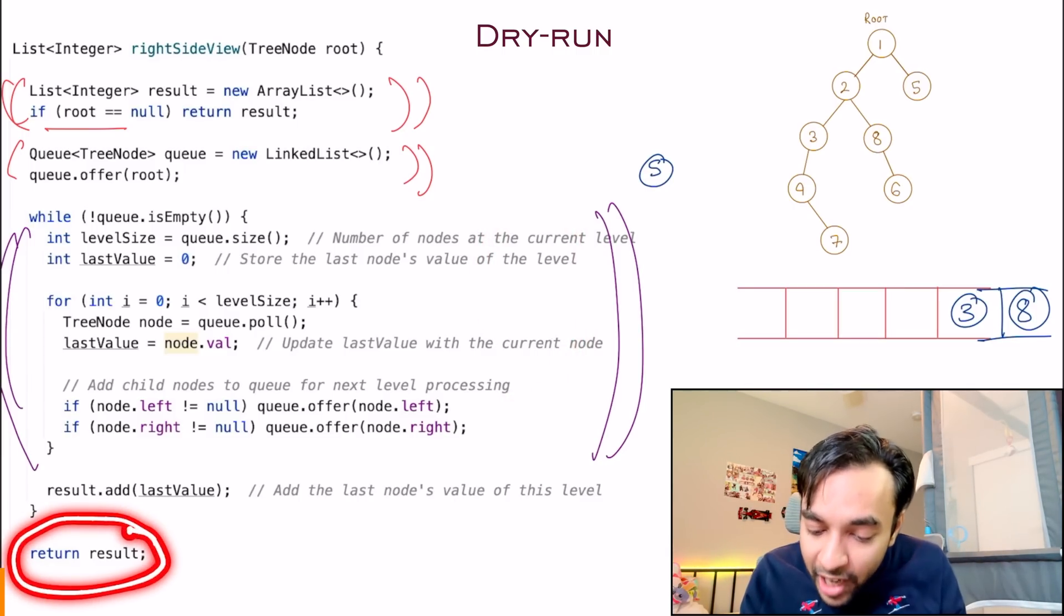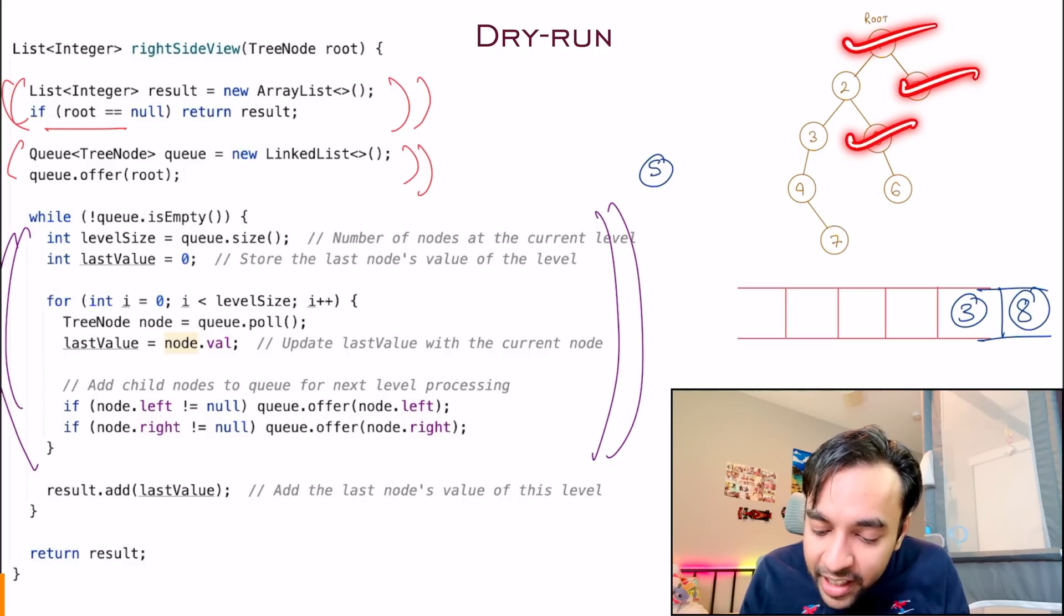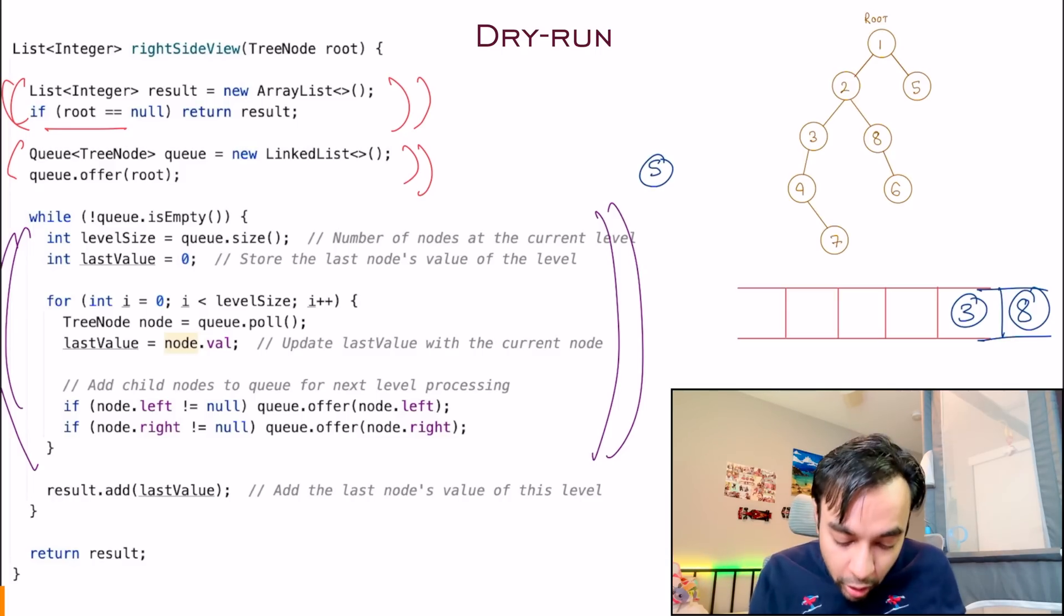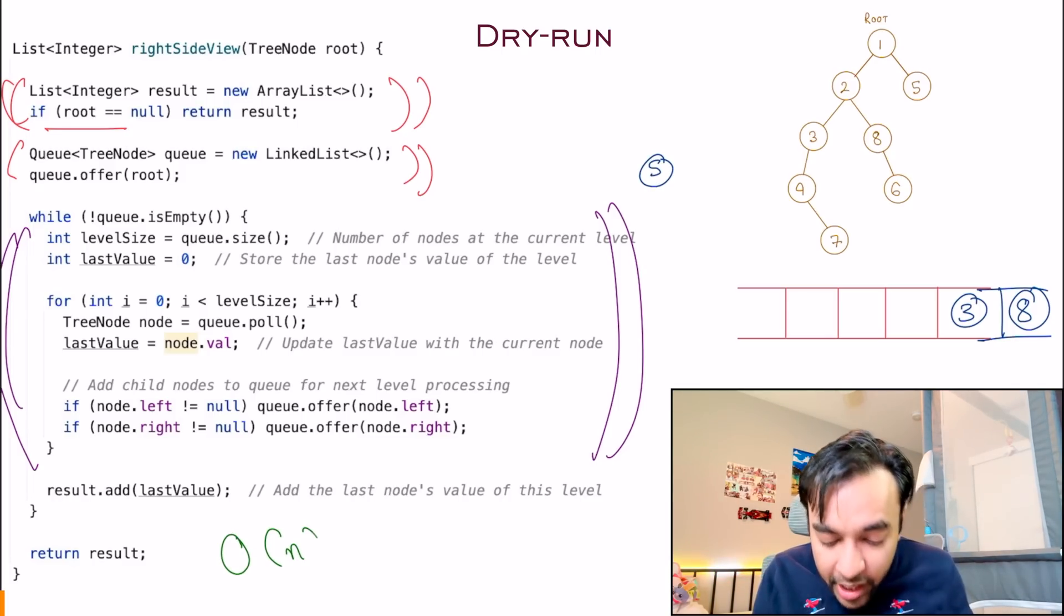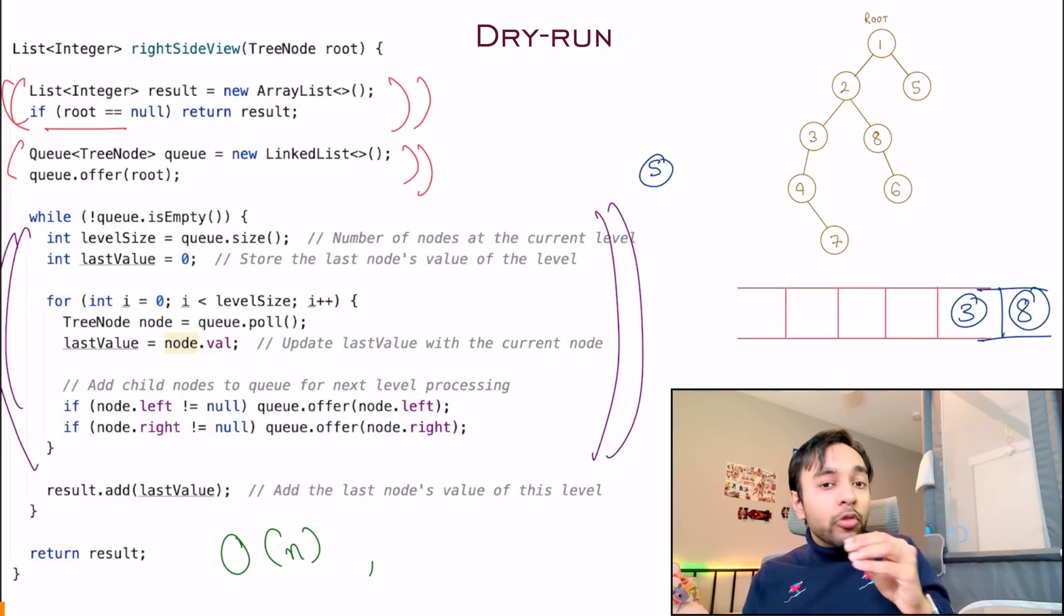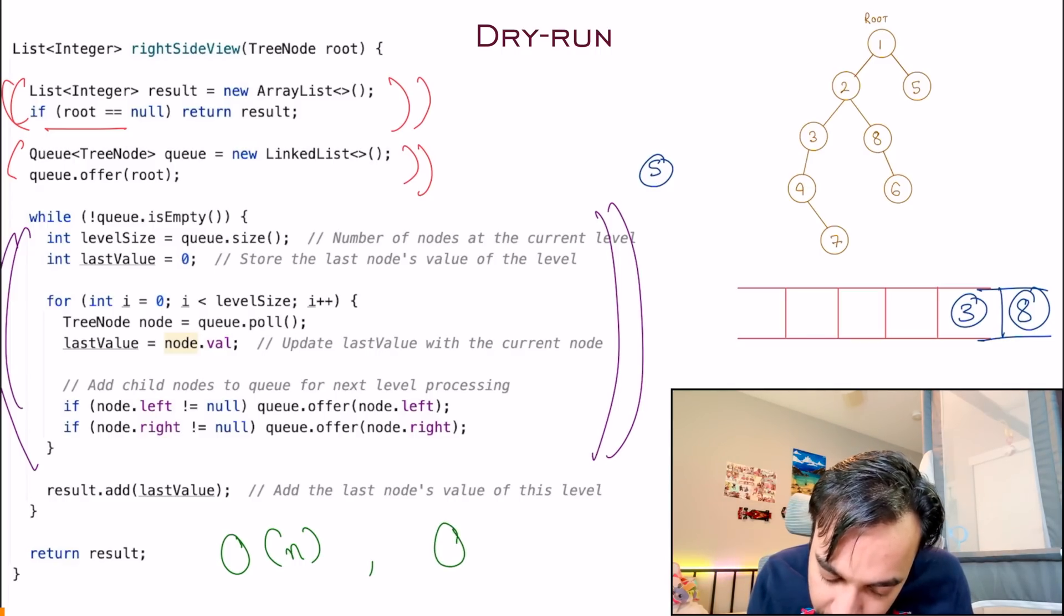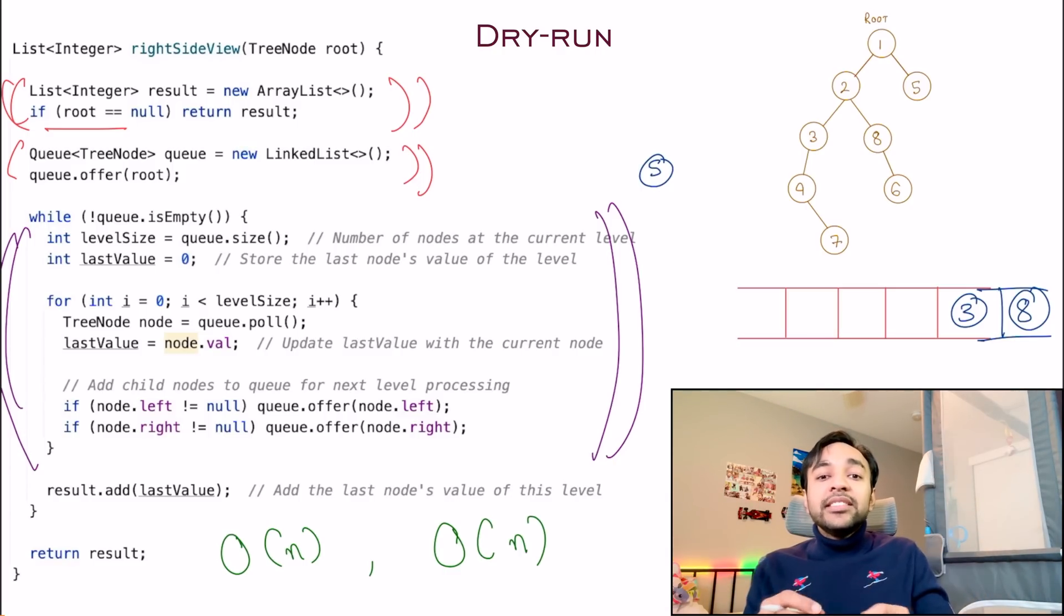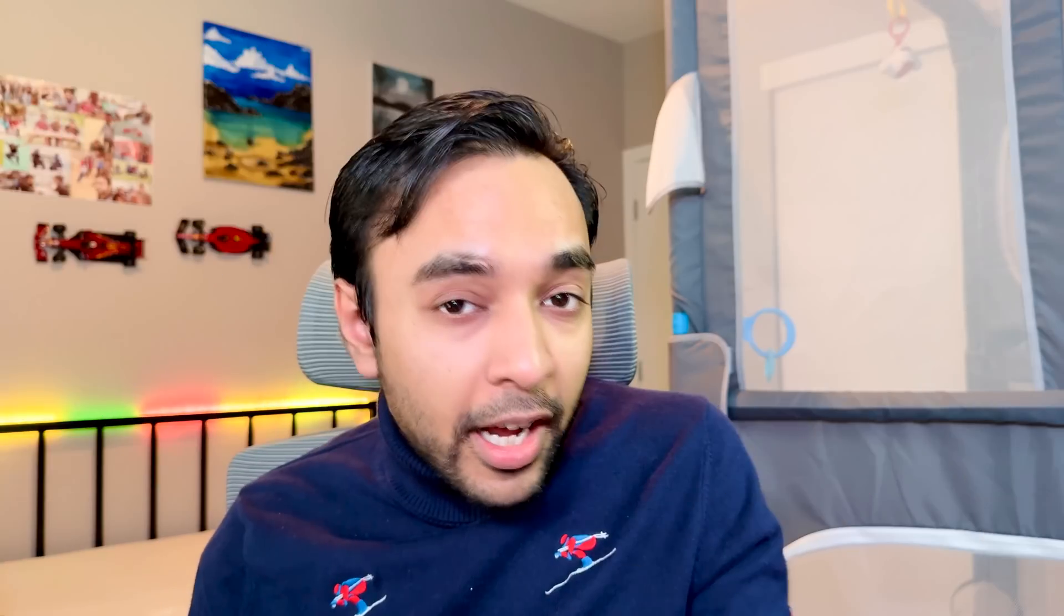This result will have all the elements that are at the right most corner of your entire tree. The time complexity of this particular solution is order of n, where n is the total number of nodes in your tree. And that is because you need to iterate over every node at least once. And the space complexity of this solution is also order of n. Because if you have a complete binary tree, then you can have at most n nodes in your worst case that are present in your queue.